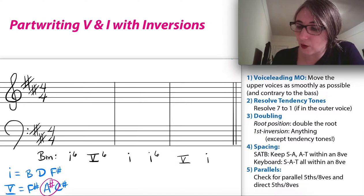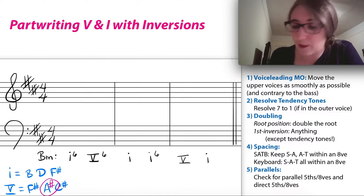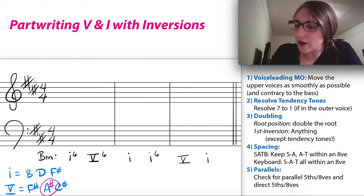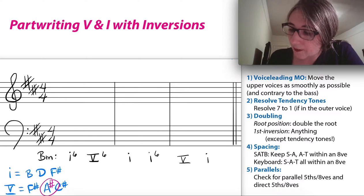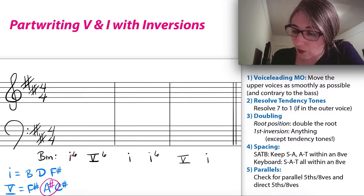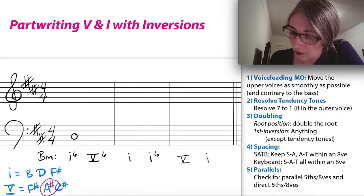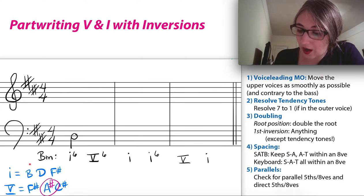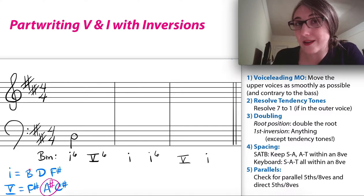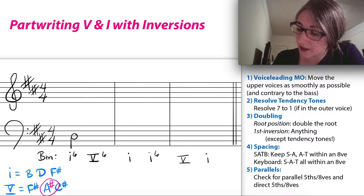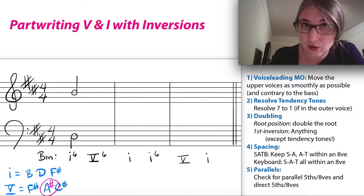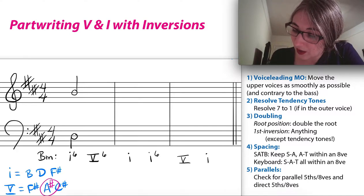When working with inversions, I suggest writing your bass note first, because that's the only note where there's no question — the bass note is fixed. For a one-six chord, the third of the chord must be in the bass, so D goes in the bass. Then you have freedom in how you arrange the upper voices. Write bass first, then spell the chord in order, and double at the end. I need to keep an octave or less between soprano and alto, and between alto and tenor.